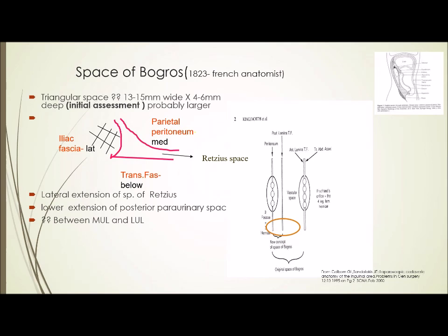If you dissect in this pre-peritoneal space, you will not damage anything in the anterior wall because all anterior wall vessels lie between layer one and layer two. If you do a pre-peritoneal dissection and find bleeding, it means you went to the wrong place - you are dissecting between one and two. It should be absolutely avascular dissection. Whether doing TAPP or TEP, dissection in this area should be absolutely avascular.